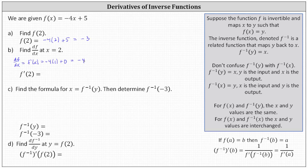Notice how regardless of the input, the derivative function values negative four. This should make sense because f of x is a linear function. If we graph a tangent line to a line, we get the same line for the tangent line, and therefore the slope of the tangent line is the same as the slope of the line given by f of x, which is negative four. This indicates f prime of two is equal to negative four.